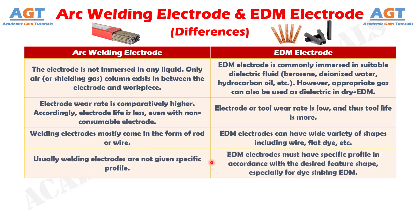Number 8: usually arc welding electrodes are not given a specific profile, whereas electric discharge machining electrodes must have a specific profile in accordance with the desired feature shape, especially for die sinking electric discharge machining.